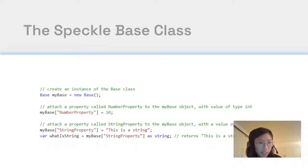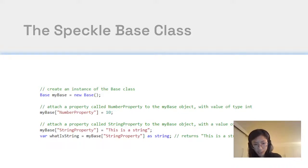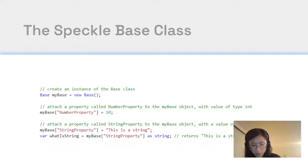Here's what that looks like. With an instance of our base class called myBase, you can attach a number property and set the value to ten. You can also attach a string property with a text value. When you retrieve the property you set, you use brackets with the name of the property, and set the type of the property value as how you defined it.